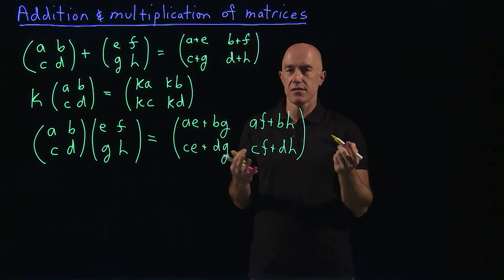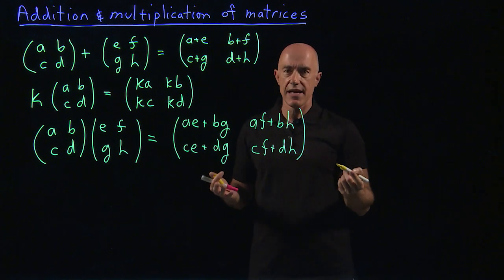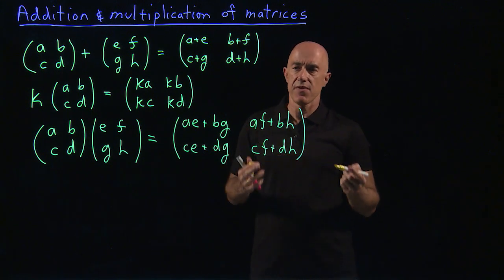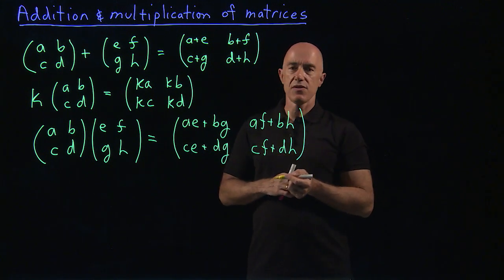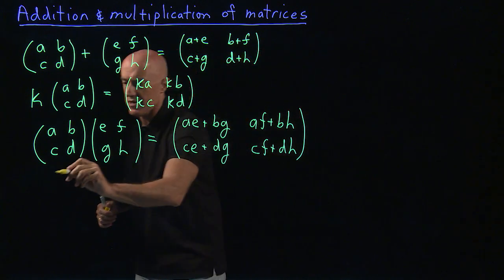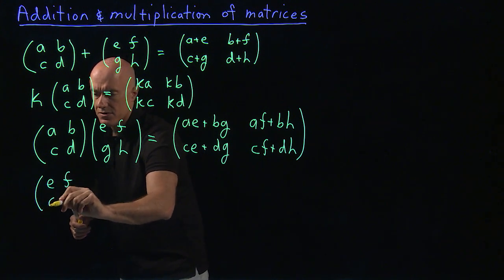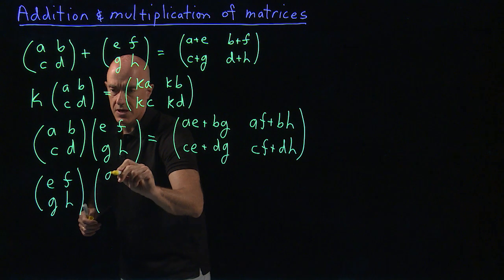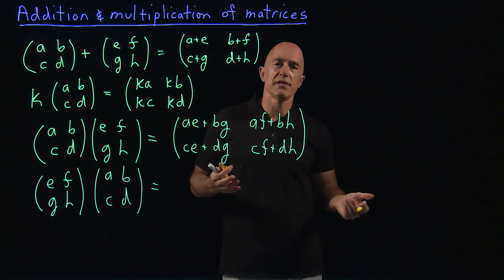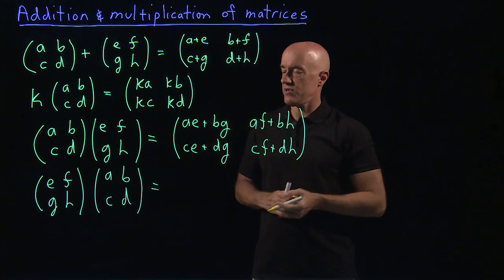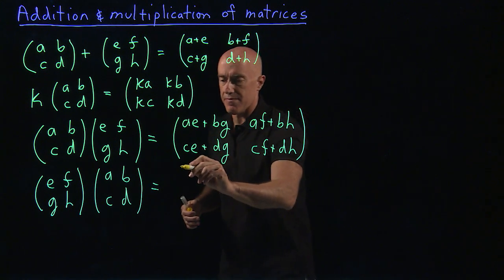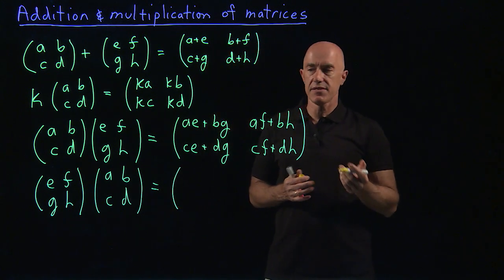Matrix multiplication is a little bit tricky, but once you get the hang of it, it's quite simple. An interesting and very important thing about matrices is that they don't commute under multiplication. So if we change the order — say we did [E, F, G, H] times [A, B, C, D] — if these were numbers you would get the same result, but matrices are not numbers. So we have to follow the same rule of arithmetic and see what we get.